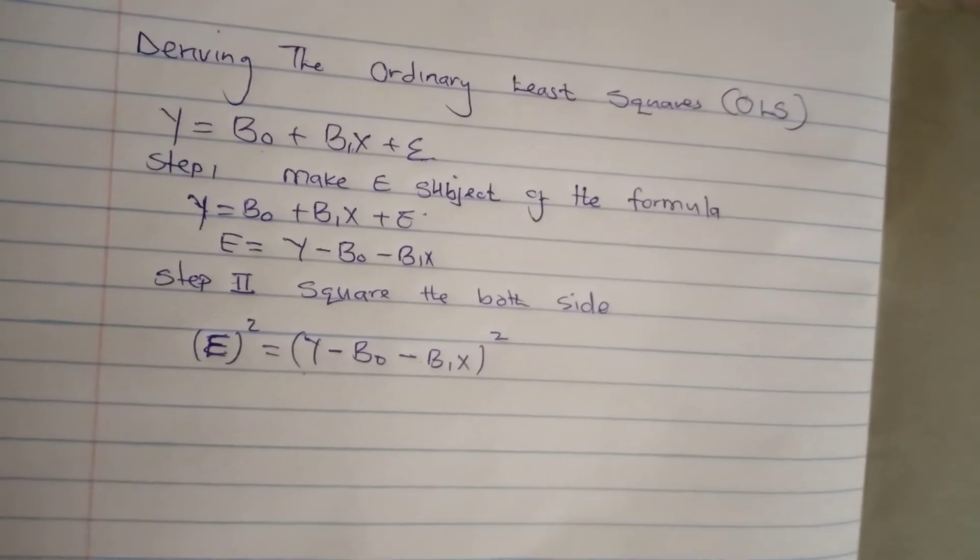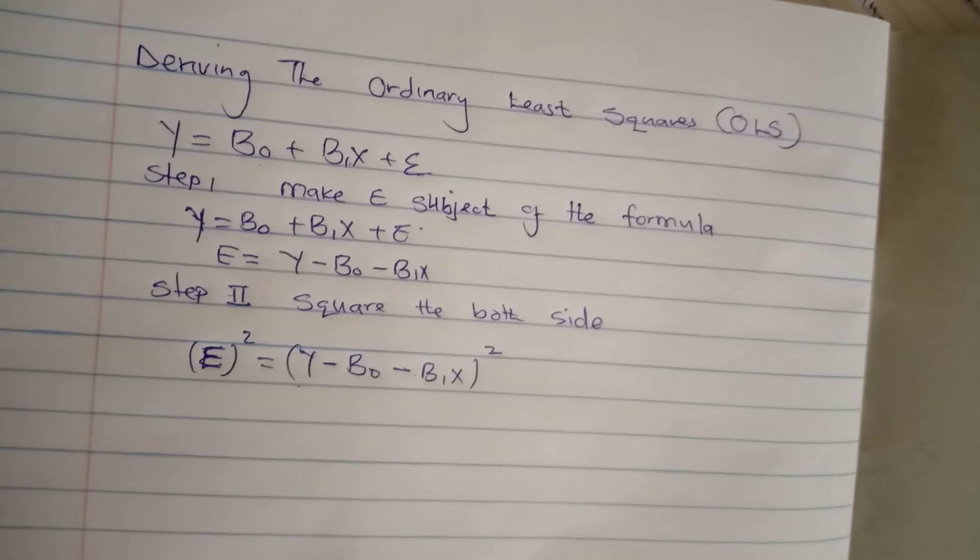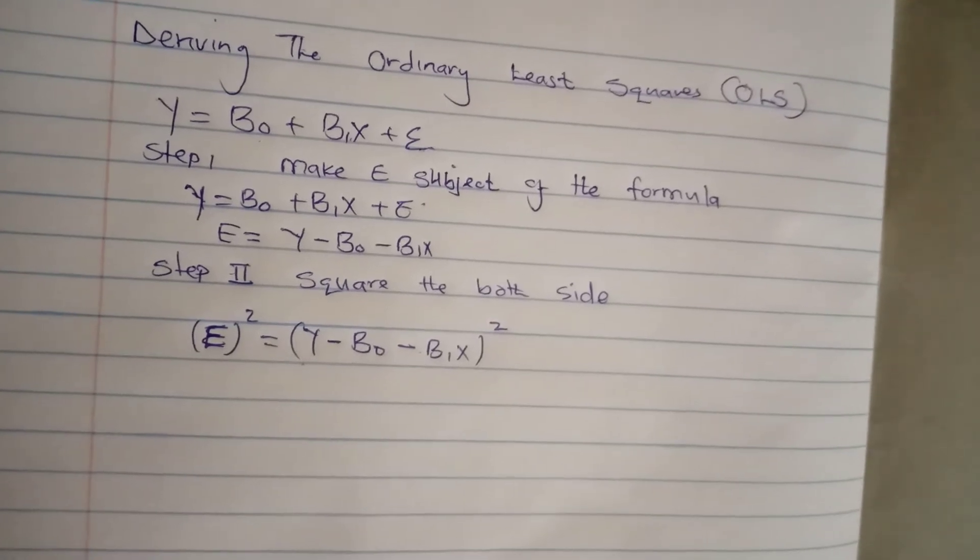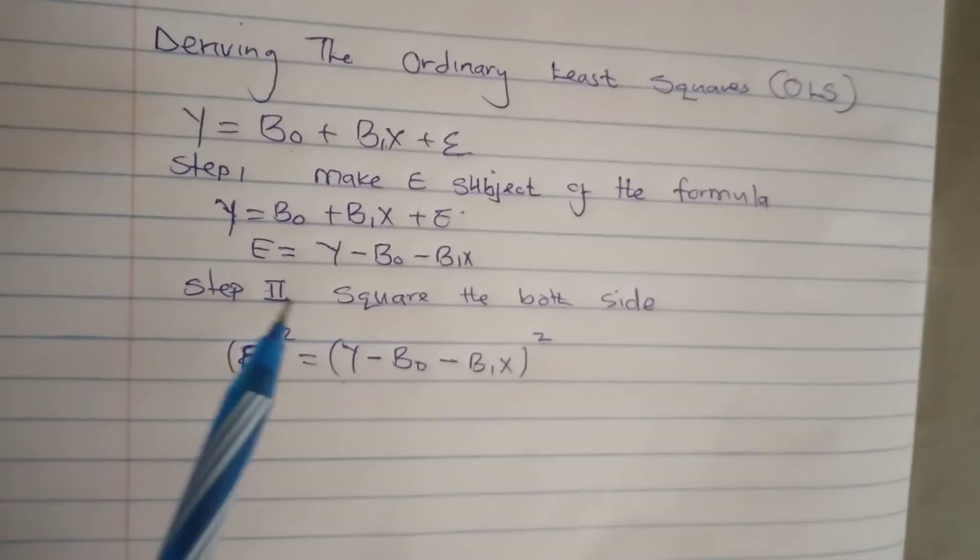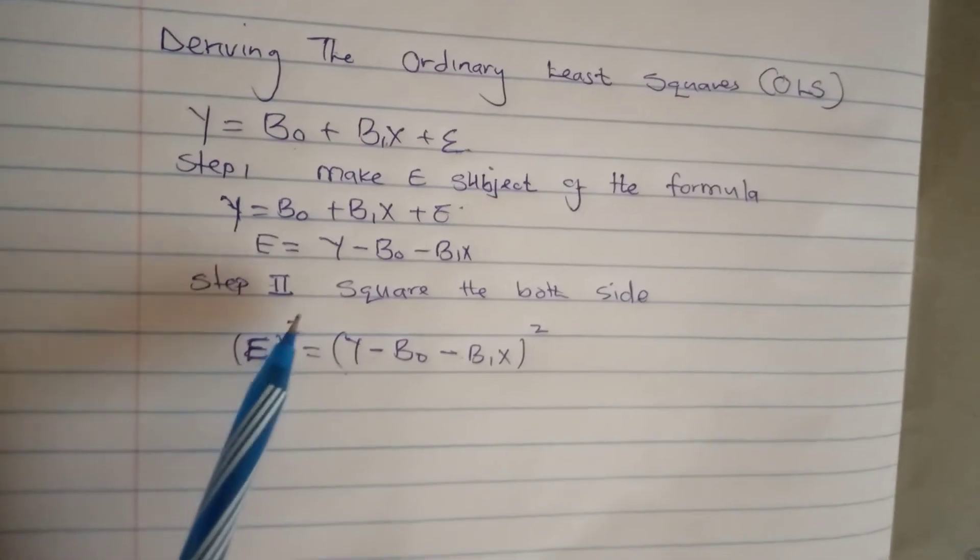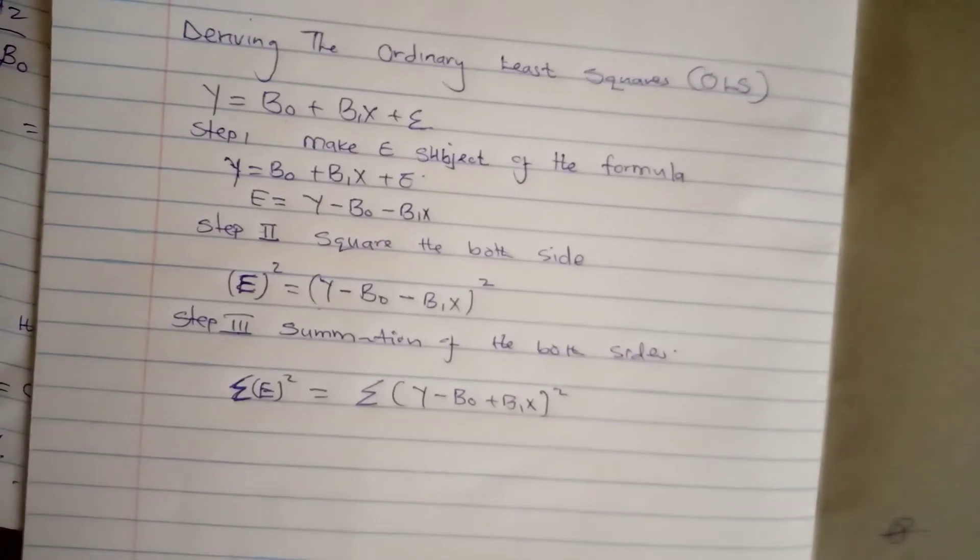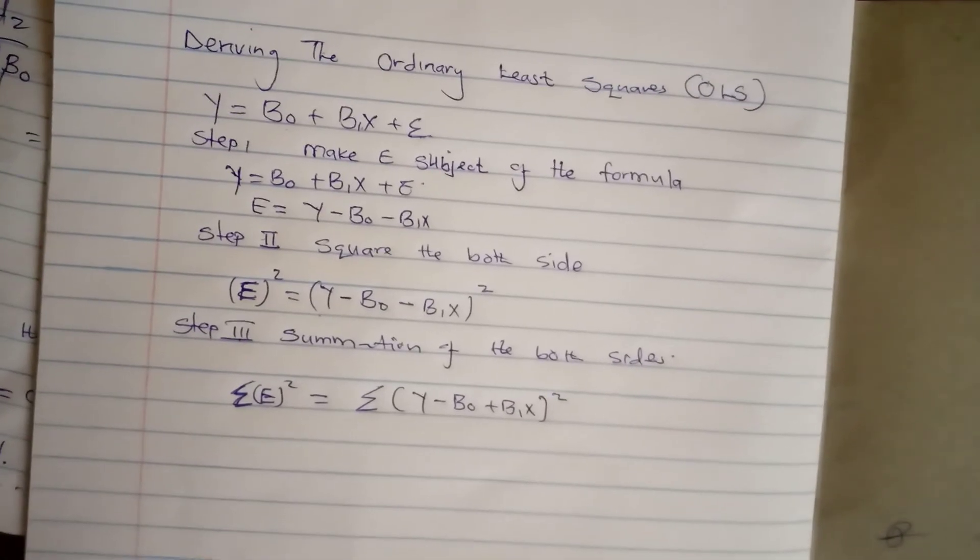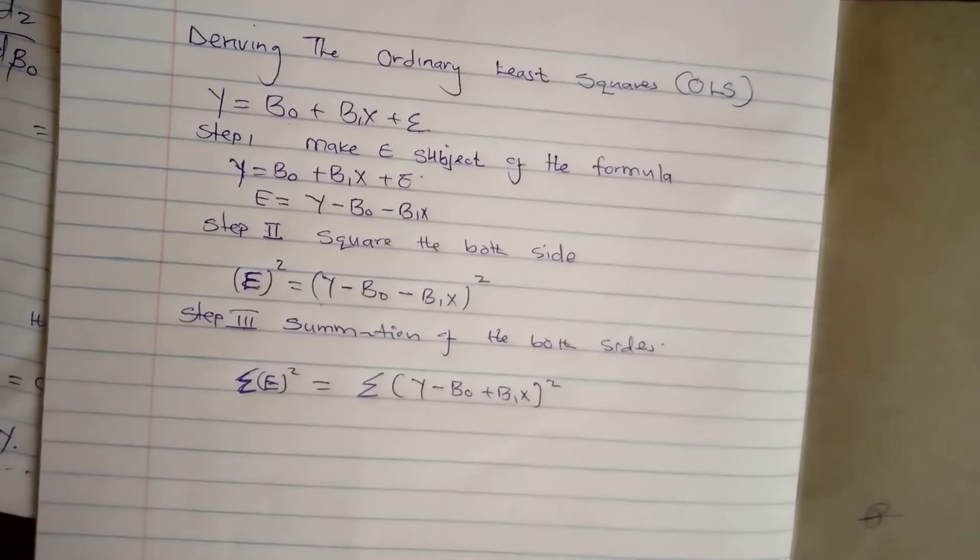Then we go to Step III, that is summation of that equation we squared. We do summation of Step II. We have added the summation to both sides.